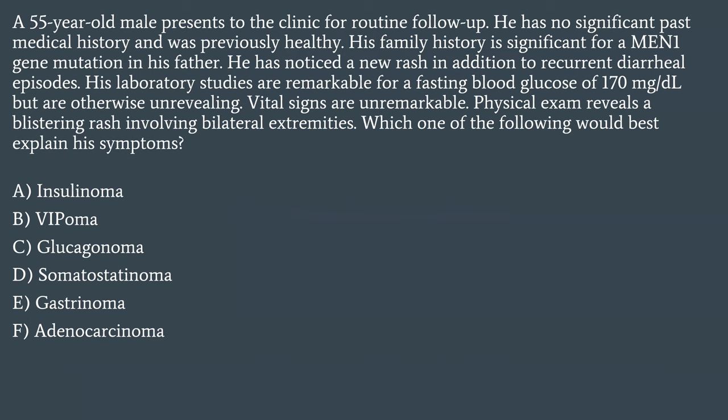A 55-year-old male presents to the clinic for routine follow-up. He has no significant past medical history and was previously healthy. His family history is significant for a MEN1 gene mutation in his father. He has noticed a new rash in addition to recurrent diarrheal episodes. His laboratory studies are remarkable for a fasting blood glucose of 170, but are otherwise unrevealing.